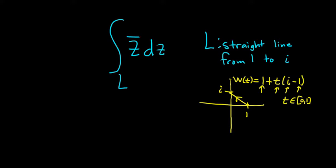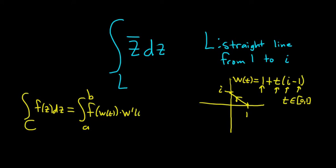The formula for this contour integral, for any contour integral, is f of z dz. Let's just use an arbitrary contour here, c. This is equal to the definite integral from a to b of f of w of t times the derivative of w with respect to t.